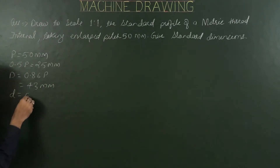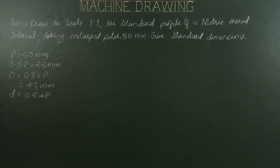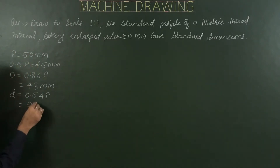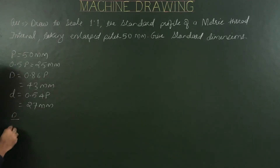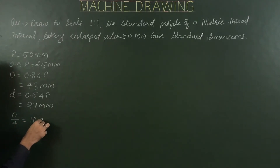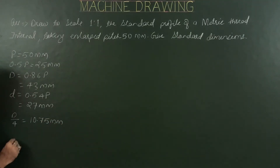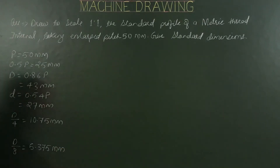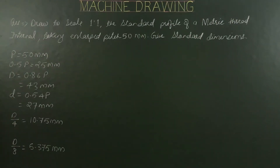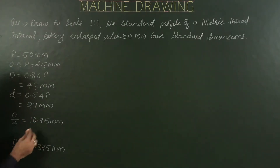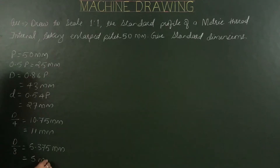Minor diameter, small d, is 0.54 of P for internal metric thread — value is 27mm. Next, capital D by 4 is 10.75mm, and capital D by 8 is 5.375mm. These are standard dimensions of metric thread internal. Now for construction work, we modify these values: 43 is okay, 27 is okay, but 10.75 rounds to 11 and 5.375 rounds to 5mm. These are final values for construction work.